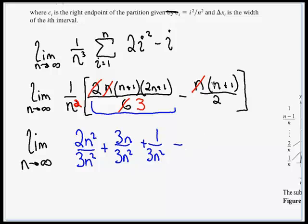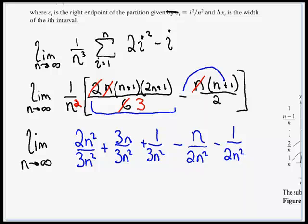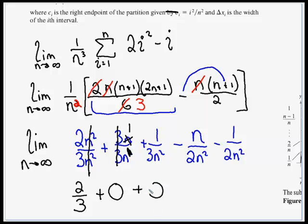Then we have minus the n plus 1 term. Distributing the negative gives minus n and minus 1 for the numerators, with denominators of 2n squared. Now we're ready to apply the limit. As n goes to infinity, the leading terms' n's cancel, leaving 2 thirds. The remaining terms — 3n over 3n squared, 1 over 3n squared, minus n over 2n squared, minus 1 over 2n squared — all head to 0. So we have our answer: 2 thirds.